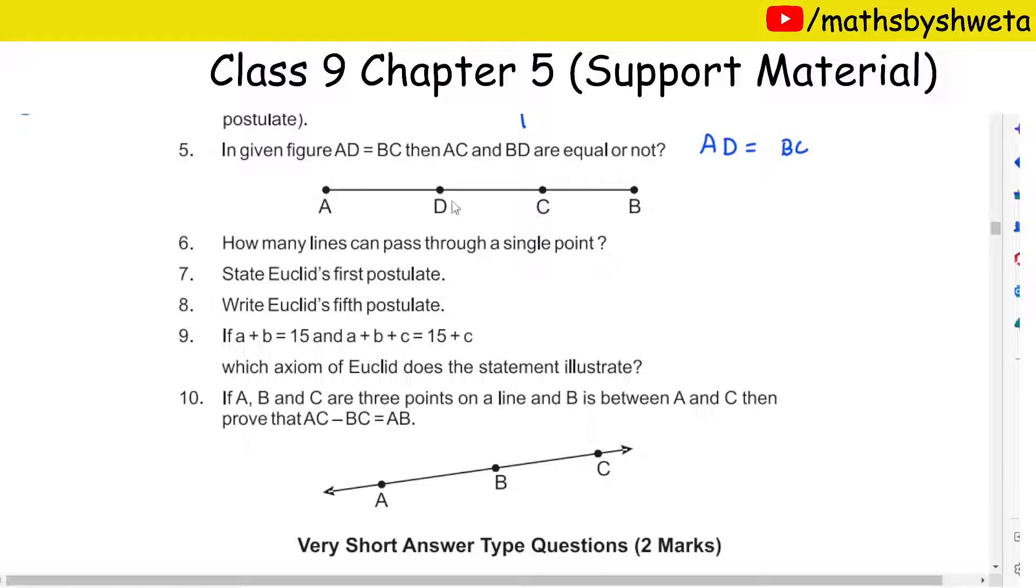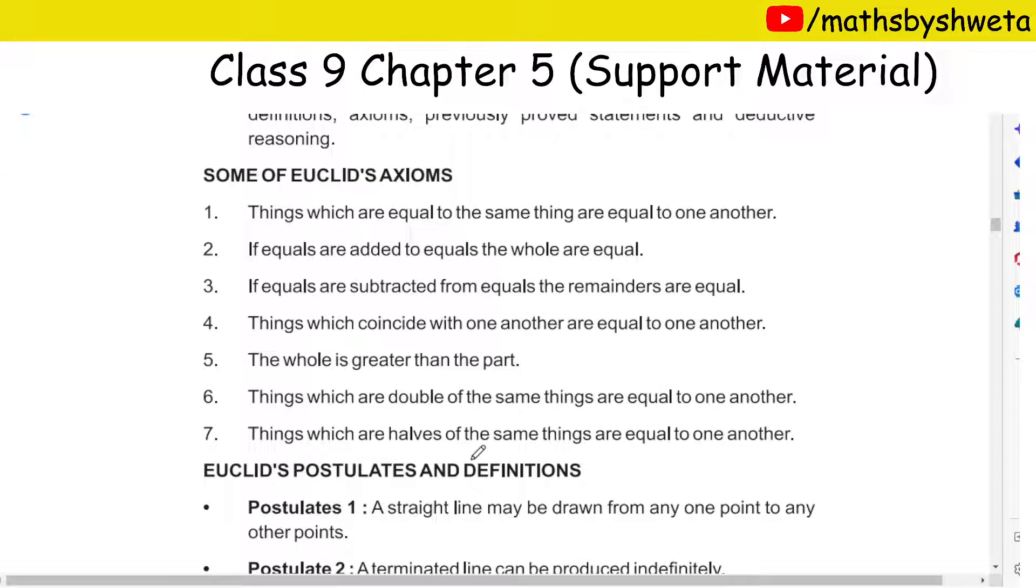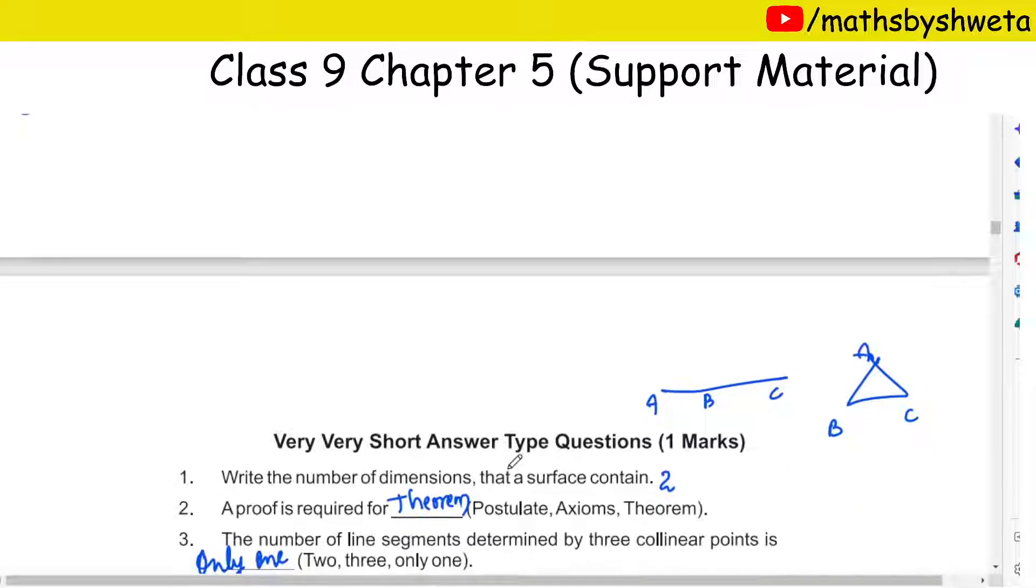So if you have this line AC and BD equal, then we will add BC to both sides. If equals are added to equal, the wholes are equal.